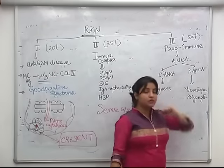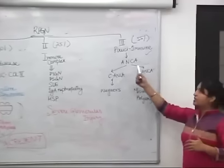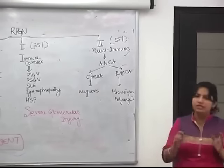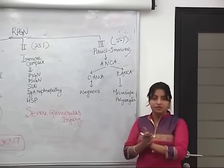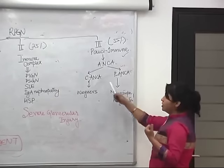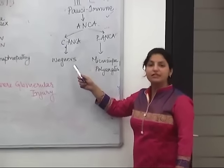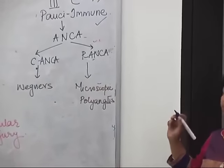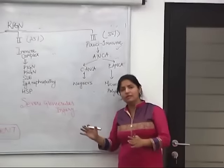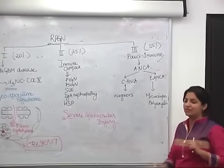Type 3 RPGN is pauci-immune RPGN, which is ANCA mediated. ANCA stands for antineutrophilic cytoplasmic antibody, commonly seen in vasculitis. There are two types: C-ANCA implicated in Wegener's granulomatosis, and P-ANCA implicated in microscopic polyangiitis. Most ANCA-mediated diseases in the kidney in RPGN are idiopathic, or sometimes associated with these vasculitic disorders.